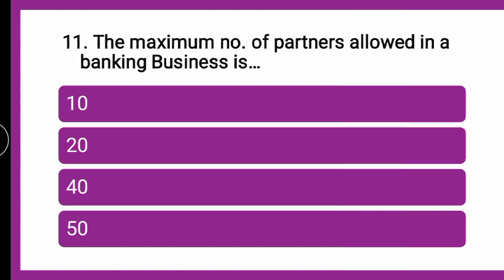Next question: The maximum number of partners allowed in a banking business is DASH — whether 10, 20, 40, or 50. The correct answer is 10. Maximum number of partners allowed in case of banking businesses is 10.